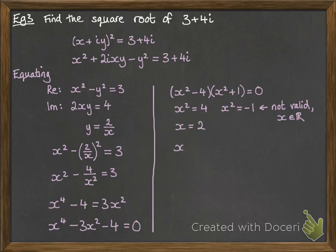So, we carry on with the x squared equals 4, and we get that x can be 2 or minus 2. When x is 2, y is 1, and when x is minus 2, y is minus 1. So, the square roots of 3 plus 4i are 2 plus i and minus 2 minus i. Just putting those values back in for x and y in our complex number.